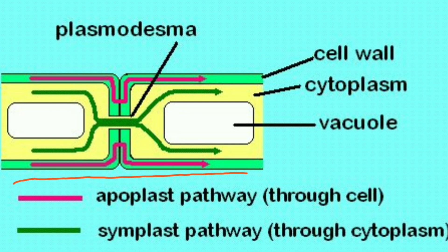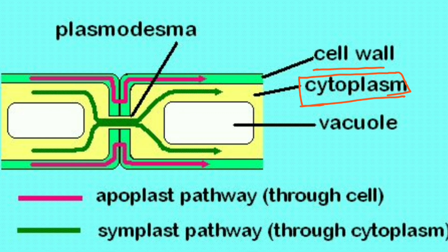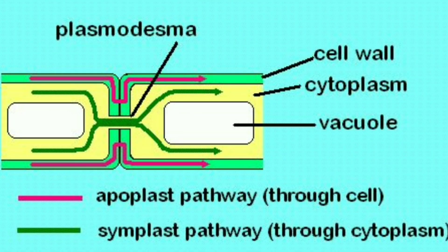Looking more closely at the cell structure: here we have one cell with a cell wall, plasma membrane, cytoplasm, and cell organelles. Root hair cells are unicellular. The cytoplasm contains a well-defined nucleus, mitochondria, and Golgi apparatus - these are eukaryotic cells, unlike prokaryotic cells which only have genetic material without a nuclear membrane.